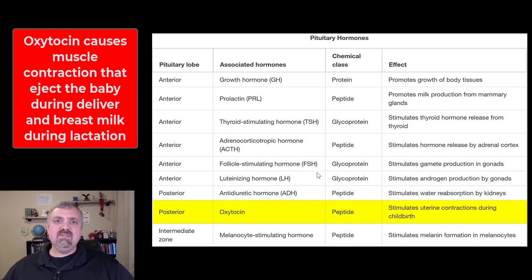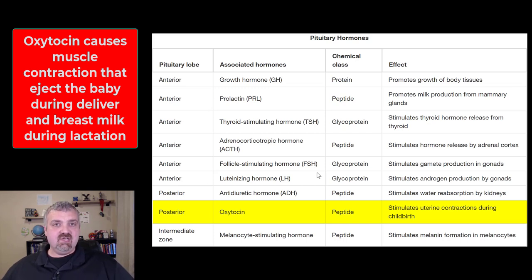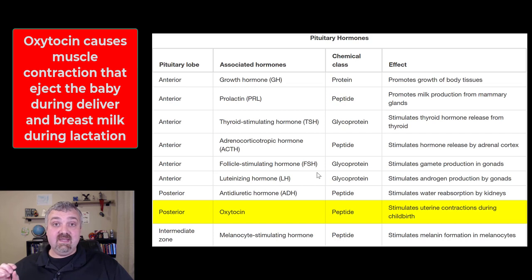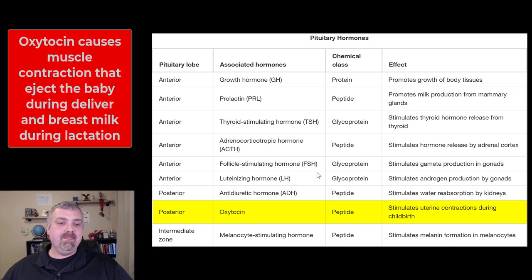Oxytocin is needed for uterine contractions during labor and delivery, and also for the ejection of milk. You can think of it as the ejection of milk and the ejection of a baby. Oxytocin can also be discussed as a pair-bonding molecule, but this is just an introduction. Think: delivery of a baby and the letdown reflex — milk release, not milk production.